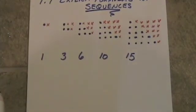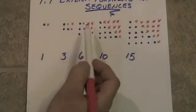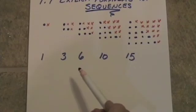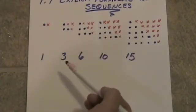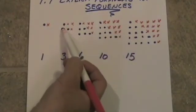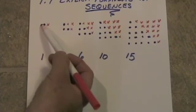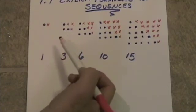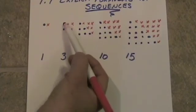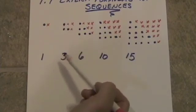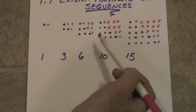Now watch the area of each of these rectangular arrays. Let's take a look. If we were looking at the total number of marks, this is a one by two array, this is a two by three array, this is a three by four array.